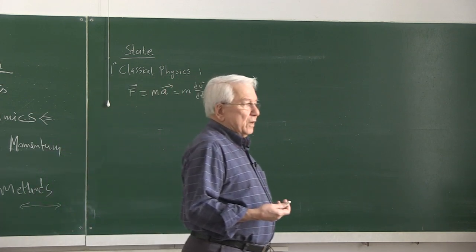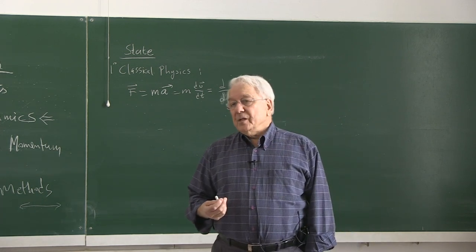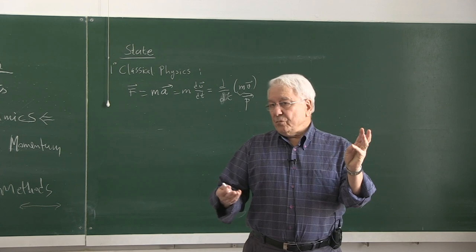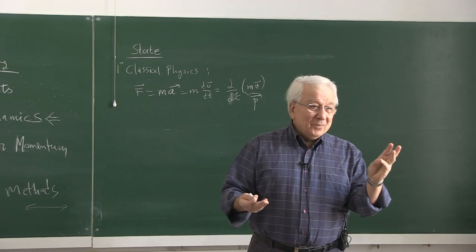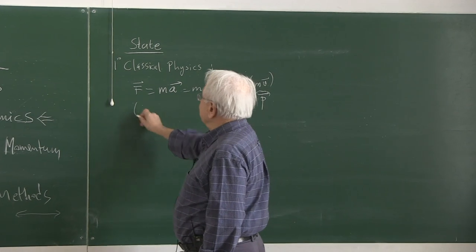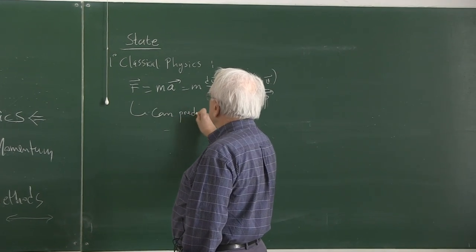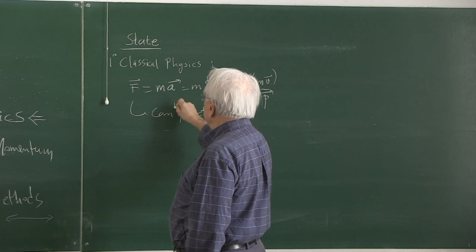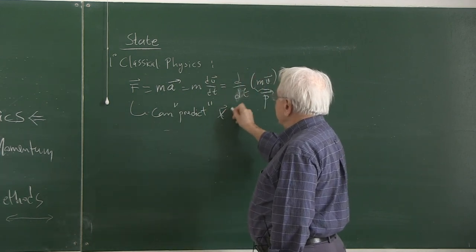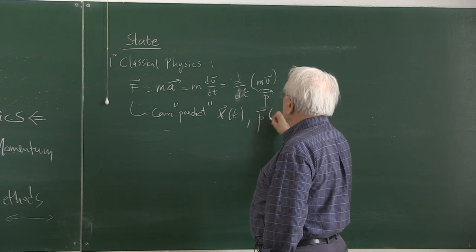I can also predict what is the state of motion of that system. The position and state of motion — that is the momentum or velocity. So it can predict — this is a crucial word — x(t) and p(t). But I put a question mark. How do I predict?